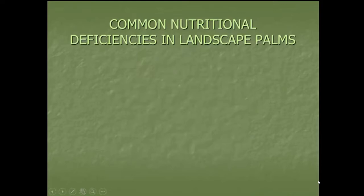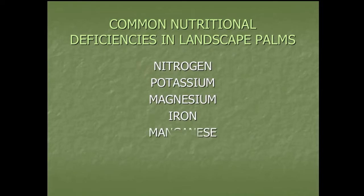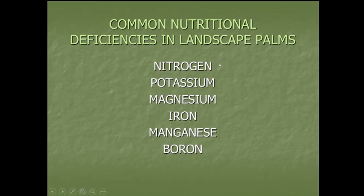The first thing we're going to deal with is nutritional deficiencies. Coming up on your screen, you're seeing the nutritional deficiencies that most often affect palms: nitrogen, potassium — a very important nutrient — magnesium, iron, manganese, and finally boron. The top three — nitrogen, potassium, and magnesium — are probably the most important, but manganese is also pretty important.